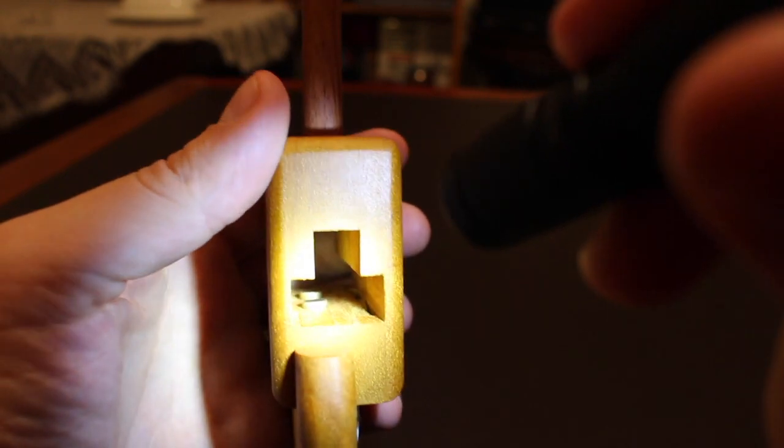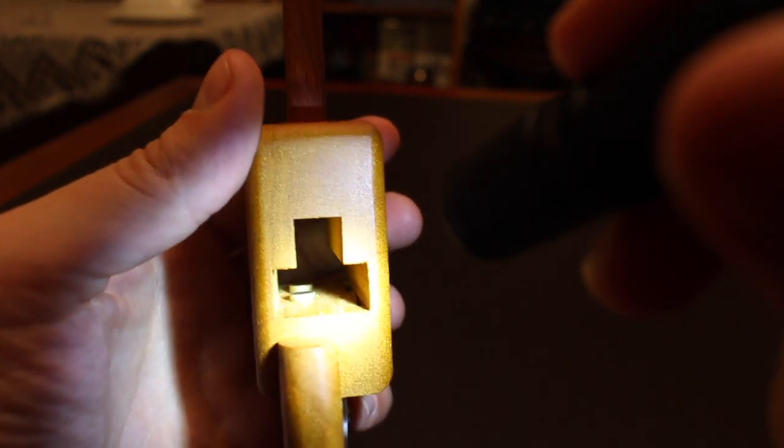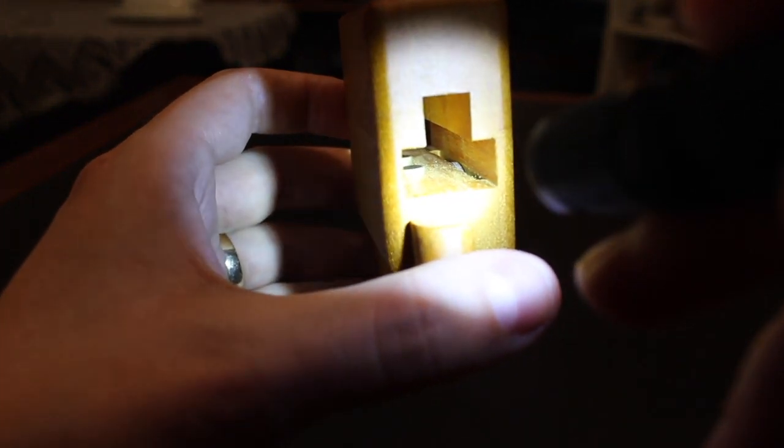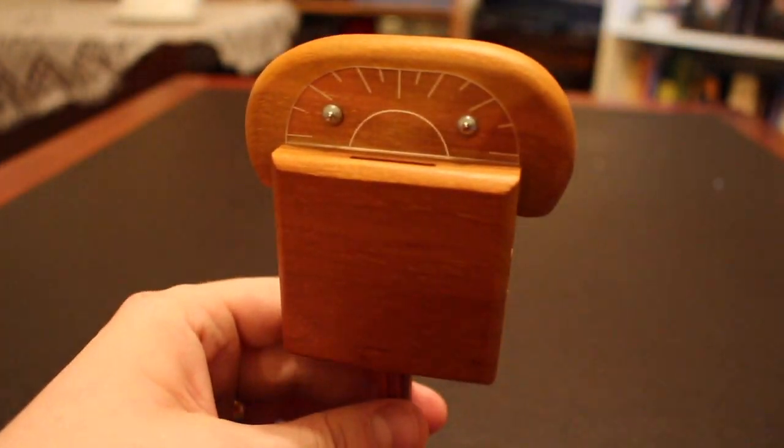And now we can see for certain, there are two push buttons in there that were holding that piece in place. Now there's nothing preventing the coin from moving, so if we flip the parking meter right side up, the coin falls into the box.